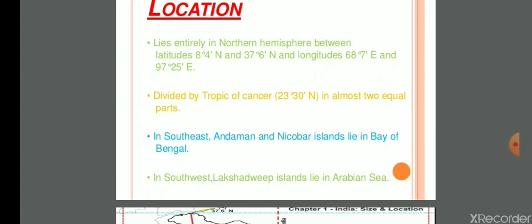India lies between latitude 8 degrees 4 minutes north and 37 degrees 6 minutes north, and longitudes 68 degrees 7 minutes east and 97 degrees 25 minutes east. The Tropic of Cancer, an imaginary line at 23 degrees 30 minutes north, divides India into almost two equal parts.